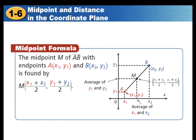Here is an example applying the midpoint formula. The midpoint M of the line segment AB with endpoints A (X₁, Y₁) and point B (X₂, Y₂). To find the midpoint, take the average of the abscissa: X₁ plus X₂ divided by 2, and Y₁ plus Y₂ over 2 — the average of X and the average of Y.